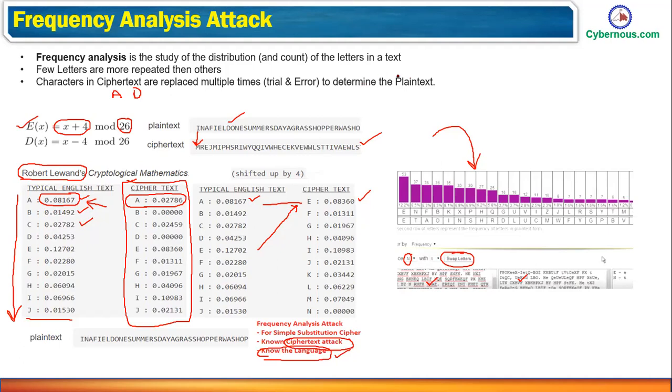So it's a very high level, I would say an idea about how the frequency analytic attack happens. You don't need to get into so much of detail. Only understand that we are making use of the most frequently used characters. And based on that, we are trying to find out some pattern. To find out that particular pattern, we use some kind of mathematics and some automated tools to actually break this type of cryptosystems.